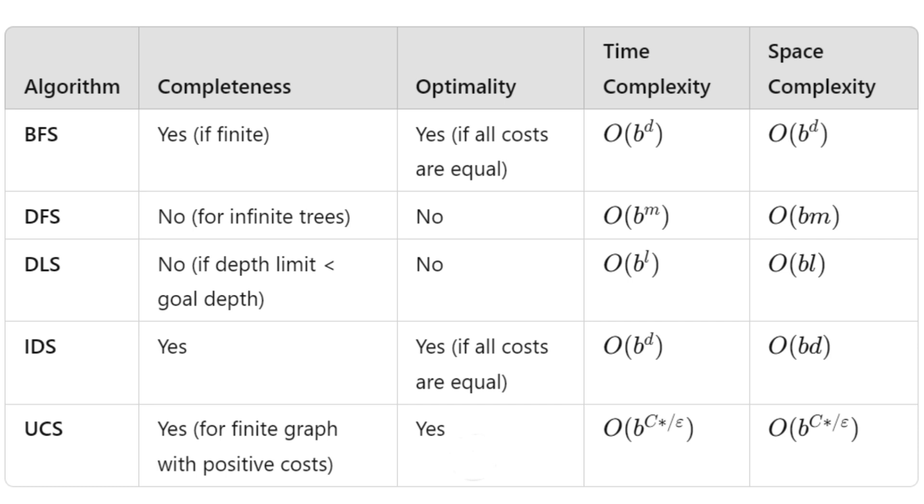Here is a comparison chart of all uninformed search algorithms, BFS, DFS, DLS, IDS, and UCS.